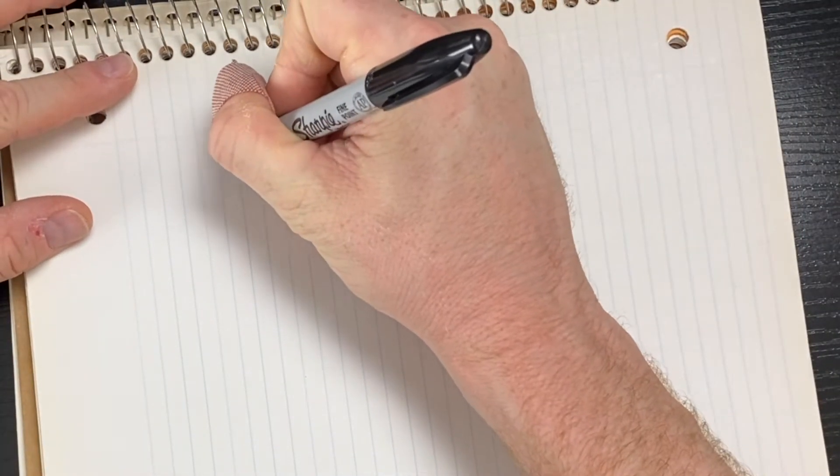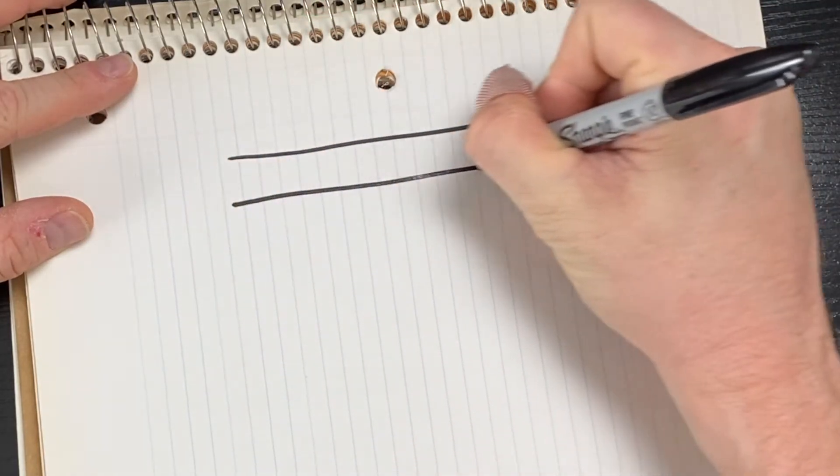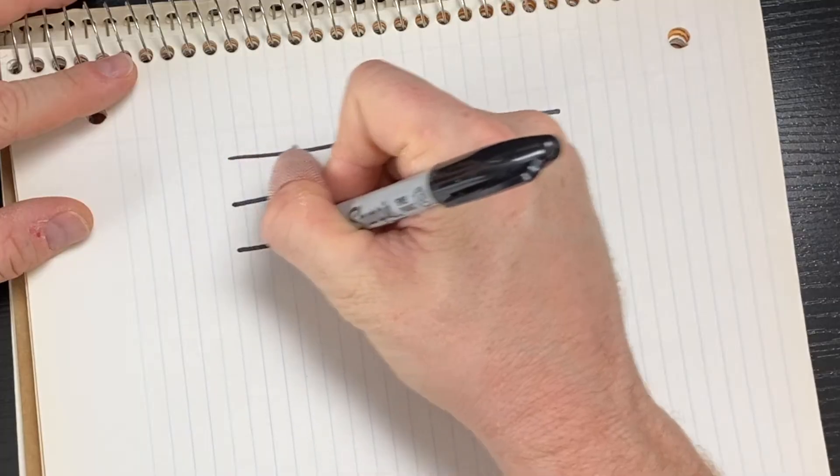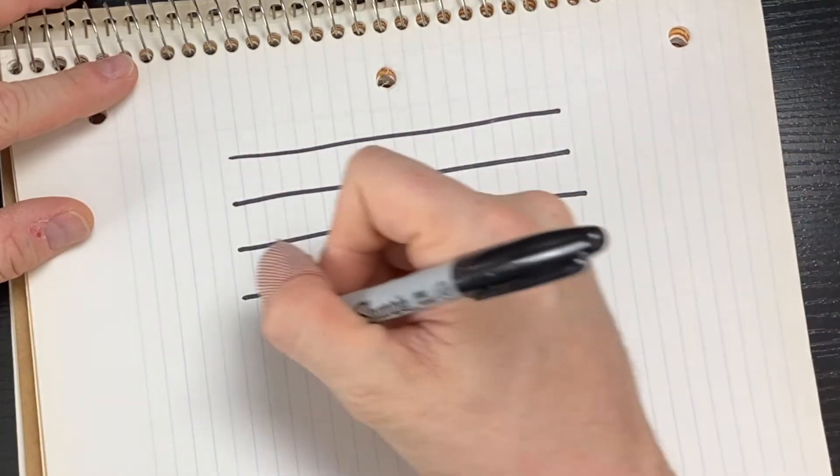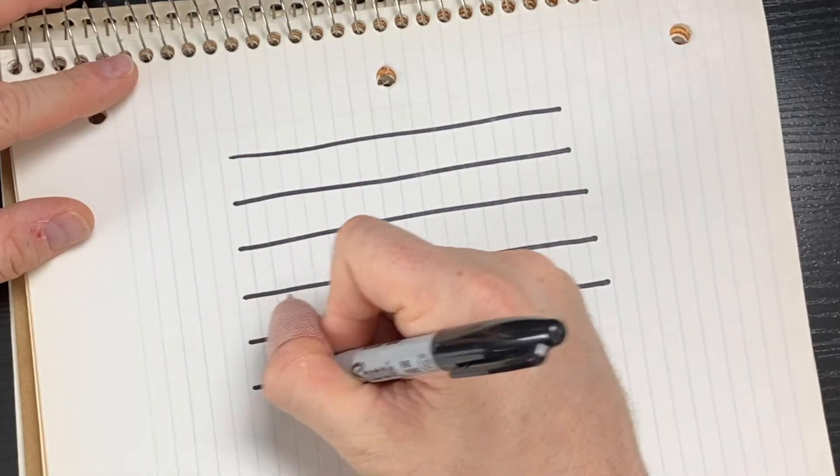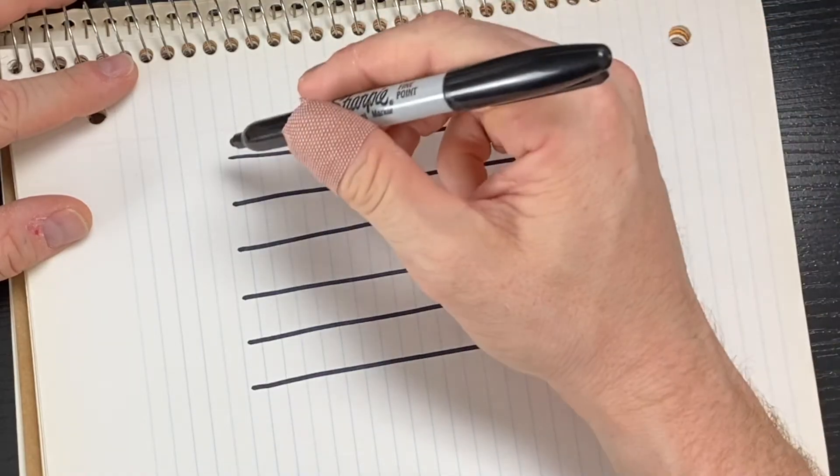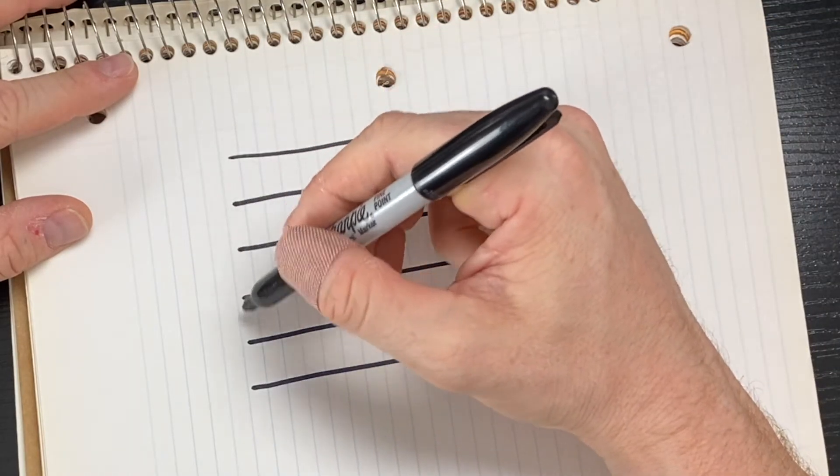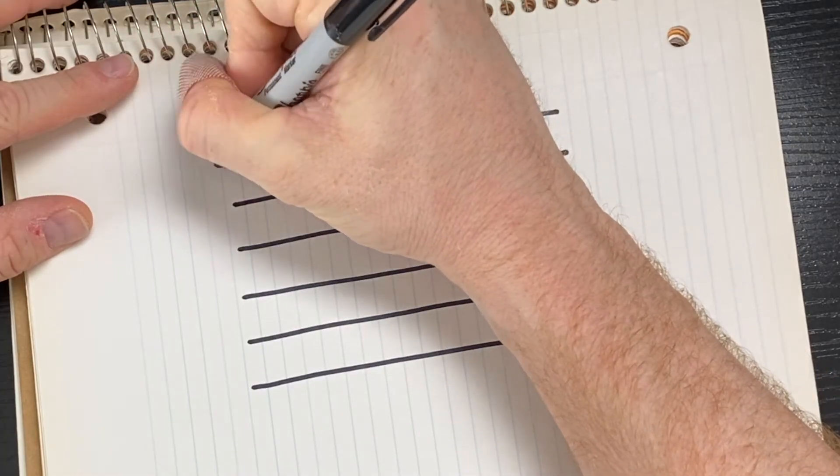First, in order to draw the lumbar plexus, you want to start off by drawing six lines as shown. For the first five lines, you're going to draw a tail on the left side just like this for numbers one through five.